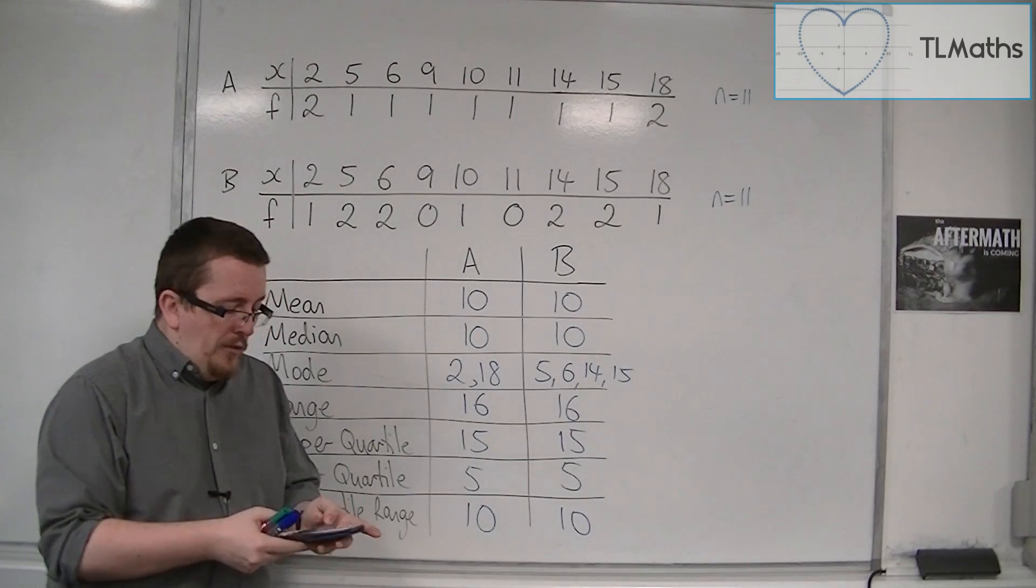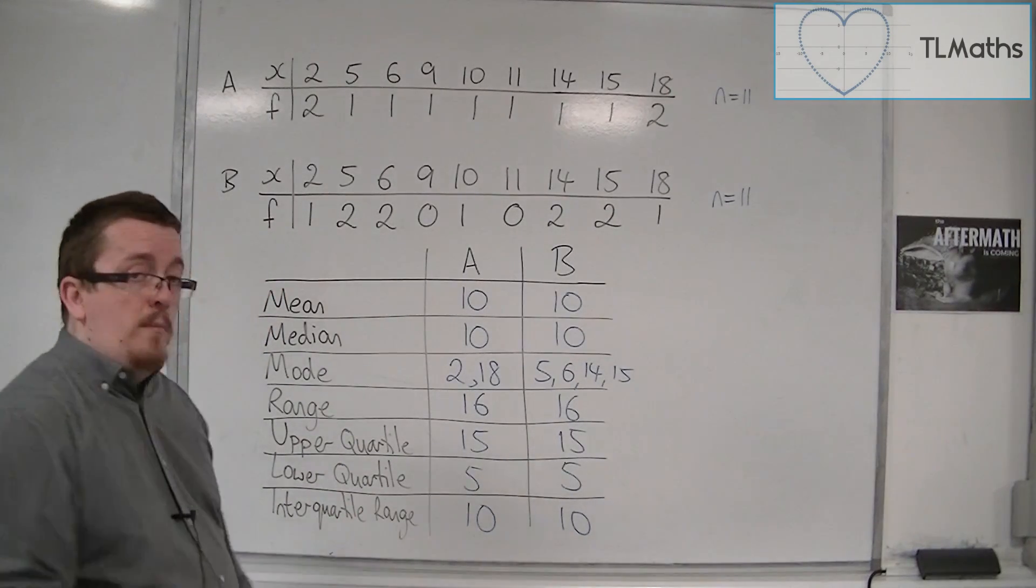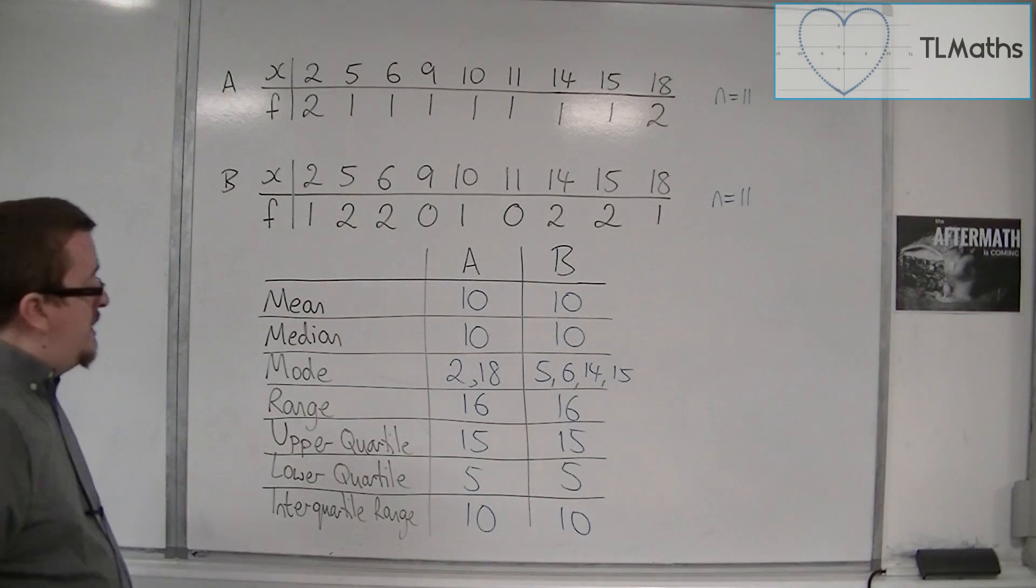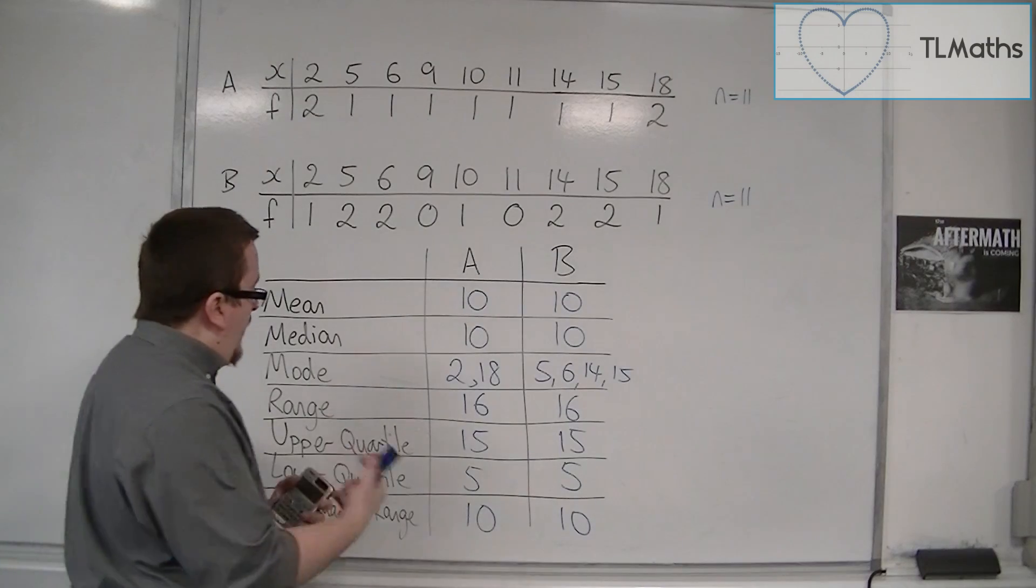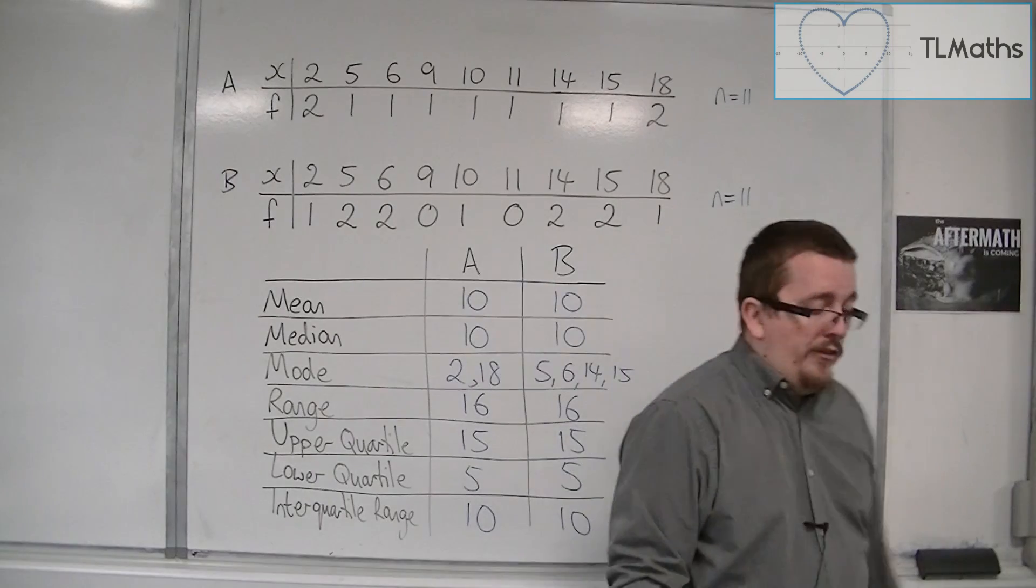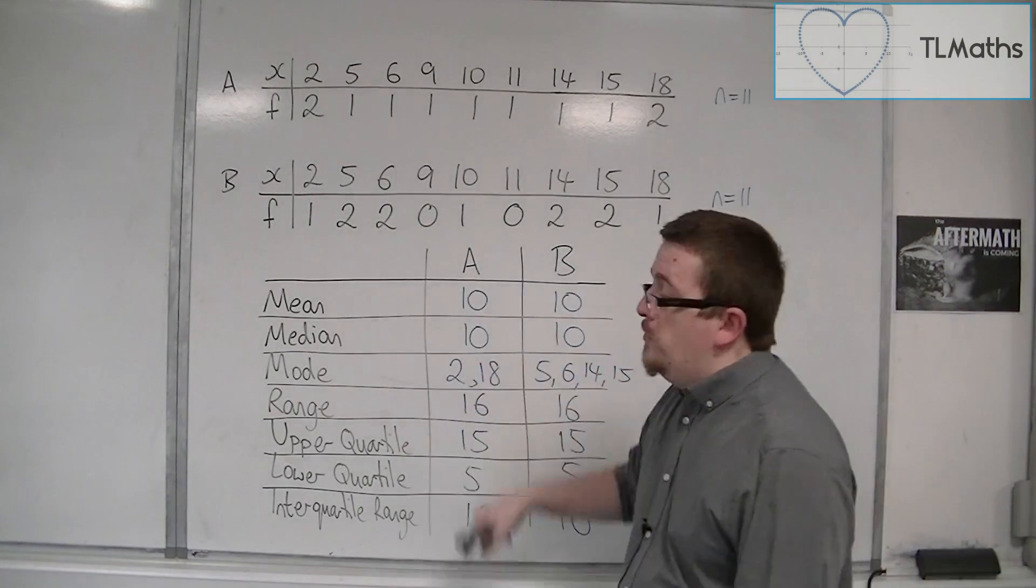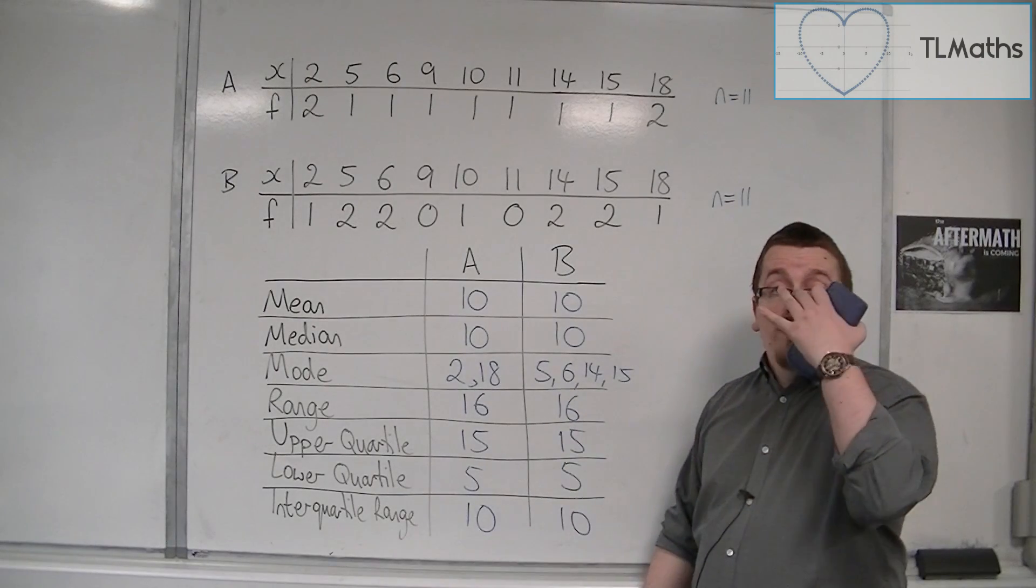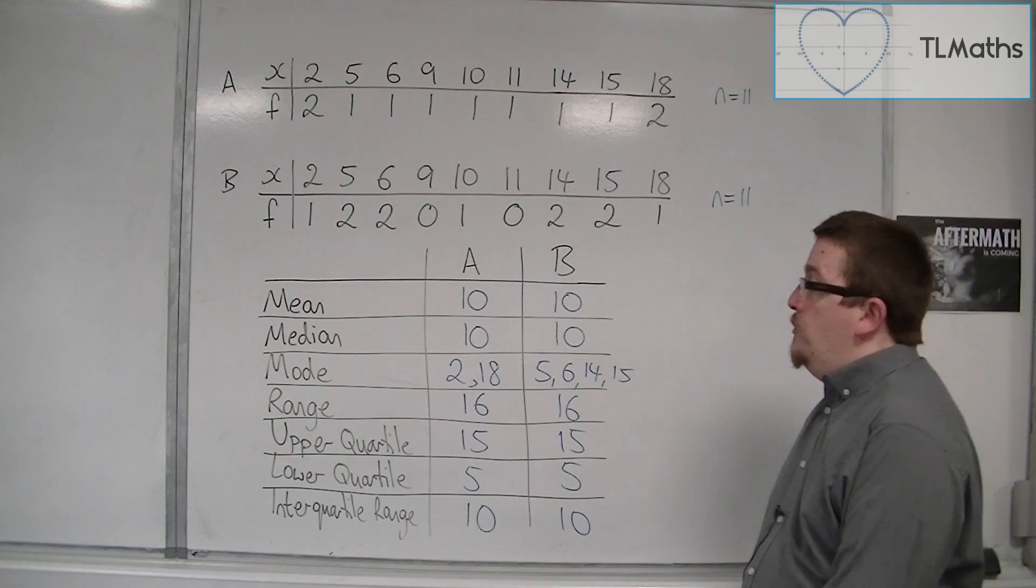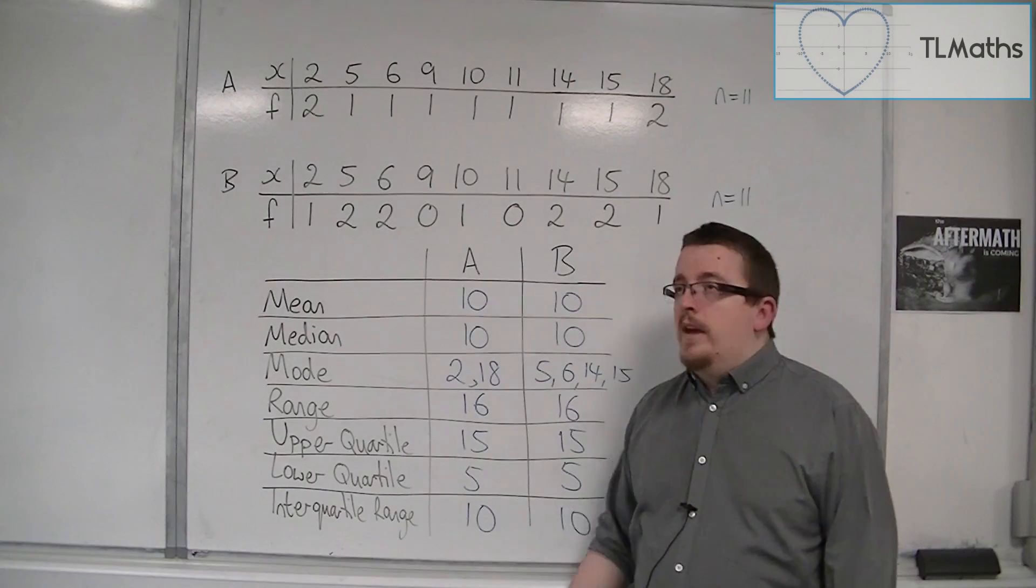So actually, the two sets of data have a lot in common. They've got the same mean, the same median, the same range, the same interquartile range. The only difference is the mode. But as you can see, because we've got four different modes here and two there, it's not really very easy to compare them. So the mode here isn't really going to be of much use.